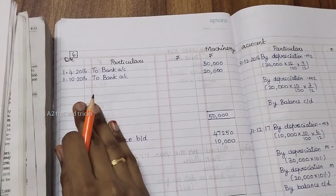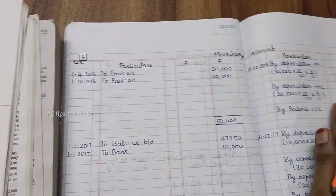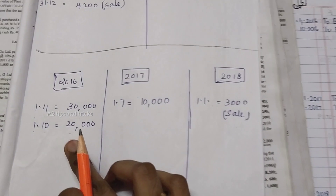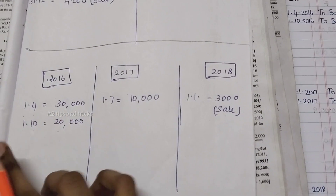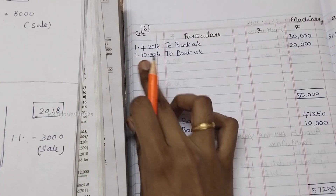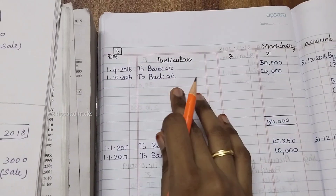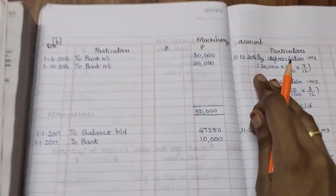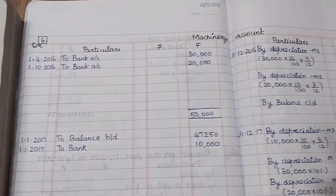In 2016, we have to go to the bank account entries. We record the machinery purchases by crediting the bank account.